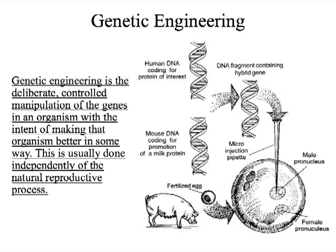This is done independently of natural reproductive processes. So it would not be considered genetic engineering if you had two dogs or horses — different animals — that you breed together on purpose to get certain traits. It's only genetic engineering if it's not a natural reproductive process.